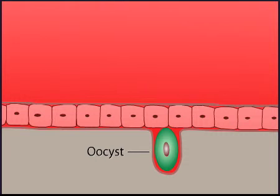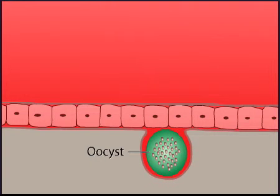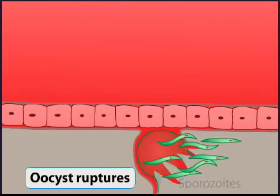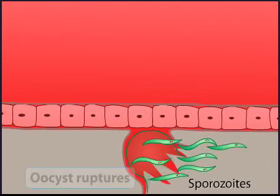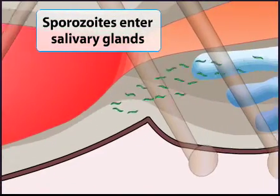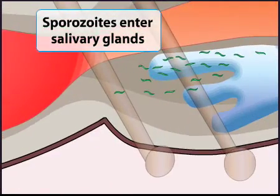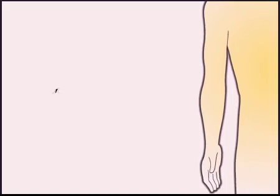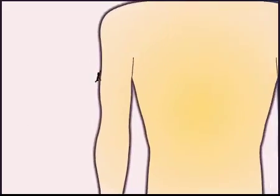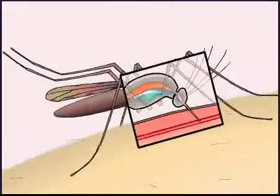Inside the oocyst, cell division occurs to produce many new cells, again in the form of sporozoites. The oocyst ruptures and releases the sporozoites, which migrate to the salivary glands. From the salivary glands, the sporozoites can infect the next human host and repeat the Plasmodium life cycle.